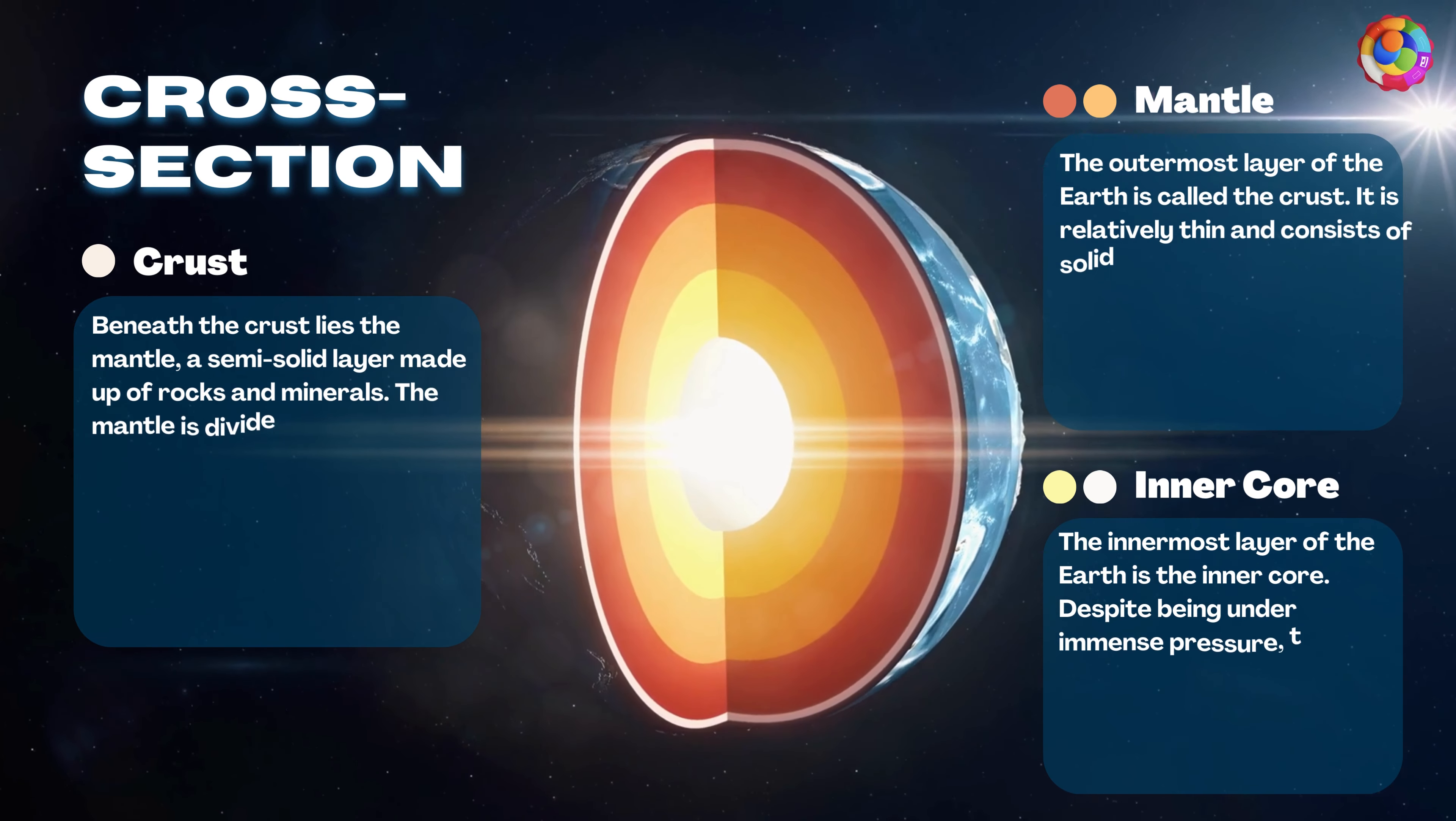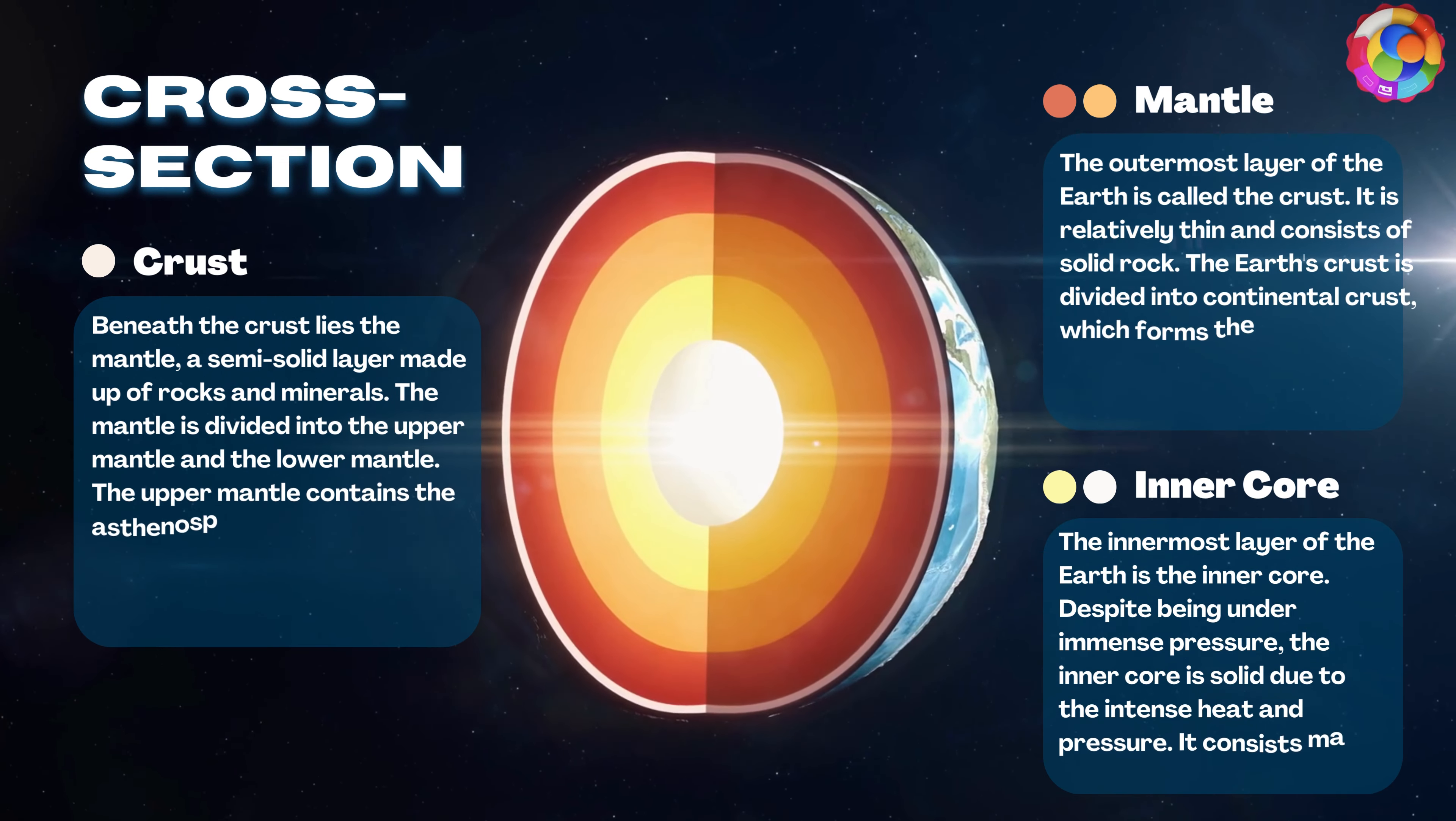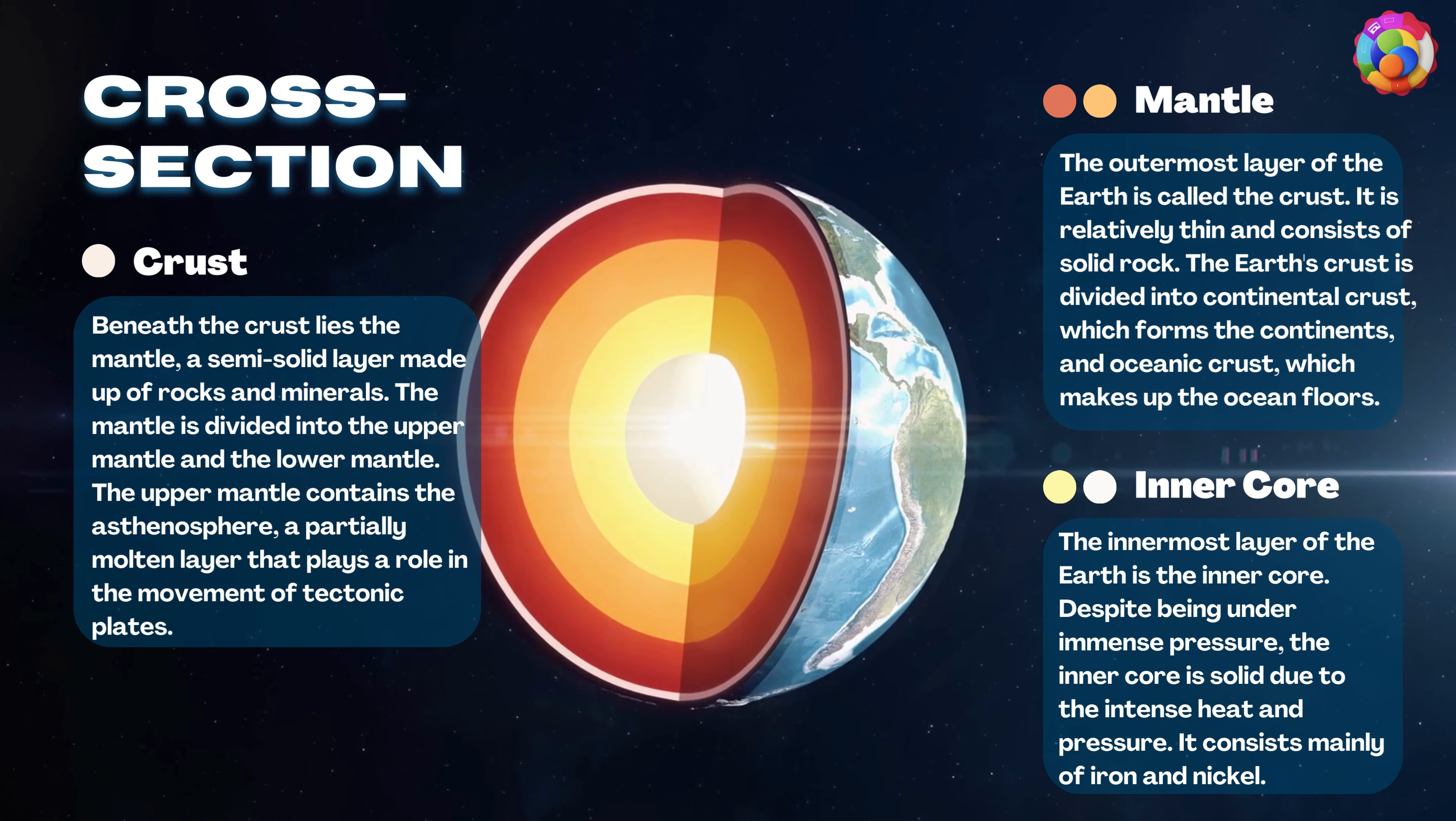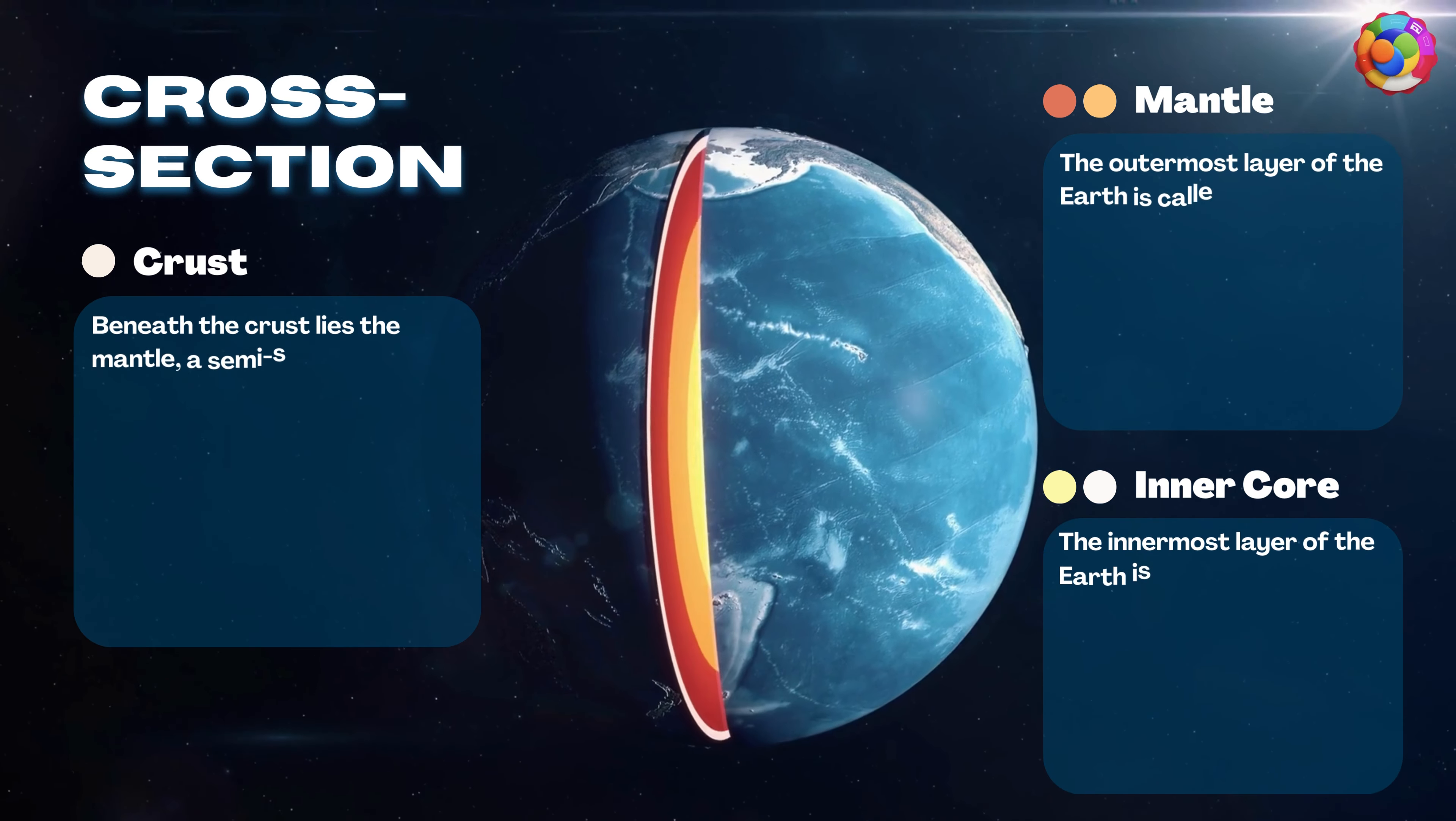The outermost layer of the Earth is called the crust. It is relatively thin and consists of solid rock. The Earth's crust is divided into continental crust, which forms the continents, and oceanic crust, which makes up the ocean floors.